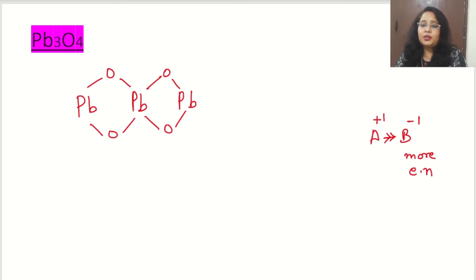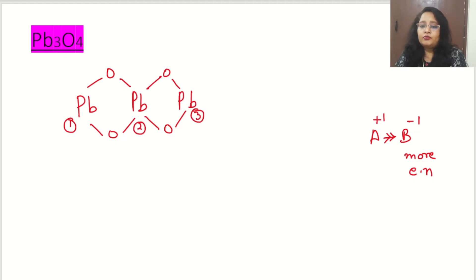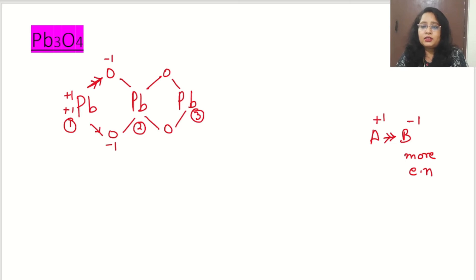Now, between lead and oxygen, oxygen is more electronegative than lead, so oxygen will take the electron pairs. We will number the lead atoms: this lead is number 1, this lead is number 2, and this lead is number 3. On lead number 1, from the first bond oxygen takes the electron pair and becomes −1, so lead becomes +1. From the second bond, oxygen takes −1 and lead becomes +1 again. So on lead number 1 we have +1 and +1, giving an oxidation state of +2.